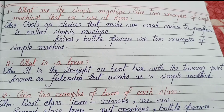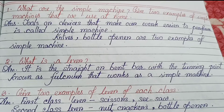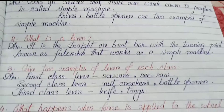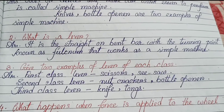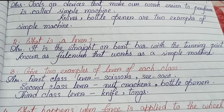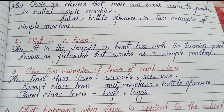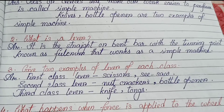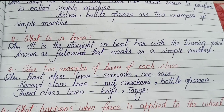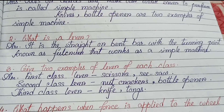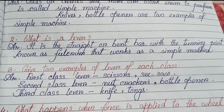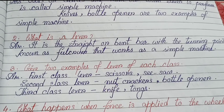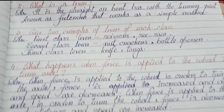Question three: Give two examples of lever of each class. First class lever: scissors, see-saw. Second class lever: nutcrackers, bottle opener. Third class lever: knife, tongs.